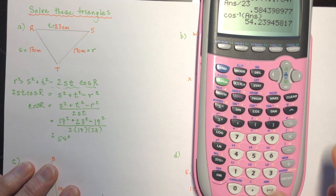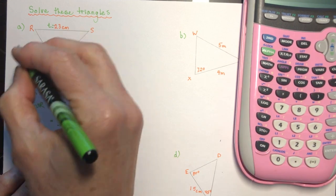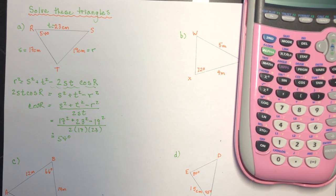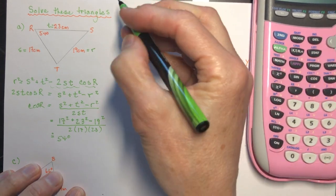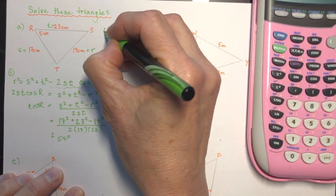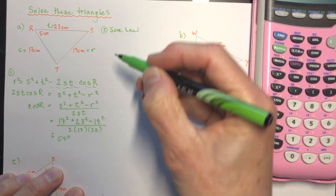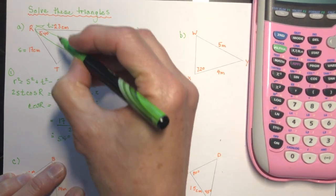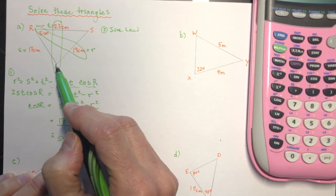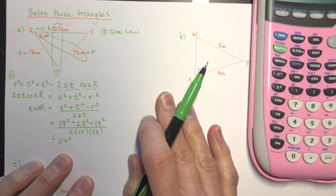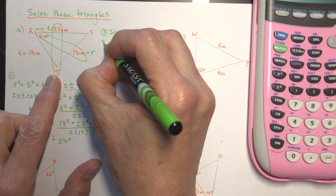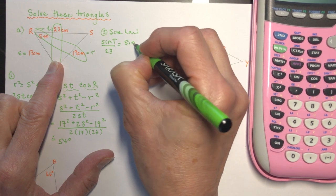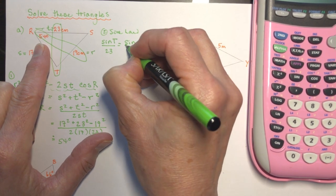Step 2 is the sine law. Using the X-pattern with angle R and its opposite side: sine of T over 23 equals sine of 54 degrees over 19. So sine T equals 23 times sine of 54 degrees divided by 19.